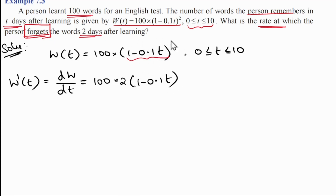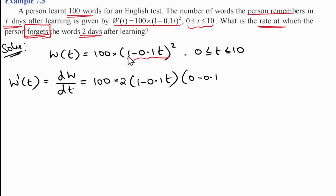Now we differentiate the full function and apply the chain rule. We differentiate 1 - 0.1t: differentiating 1 gives 0, and differentiating 0.1t gives 0.1. So the derivative of 1 - 0.1t is 0 - 0.1, which equals -0.1.